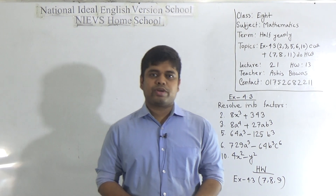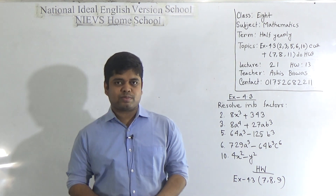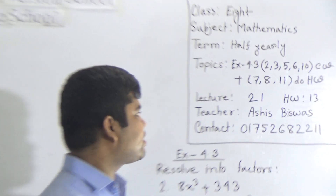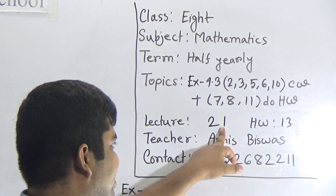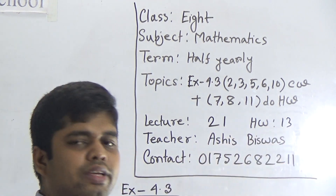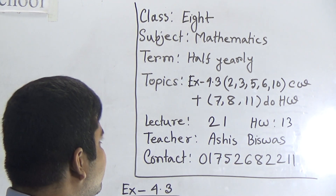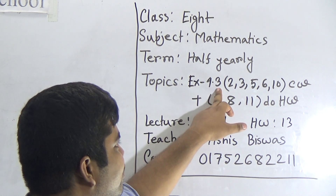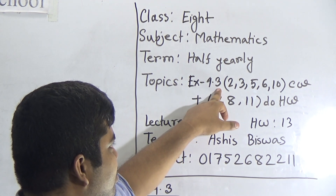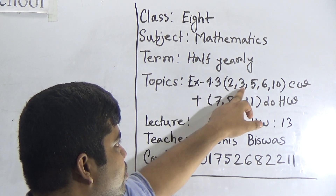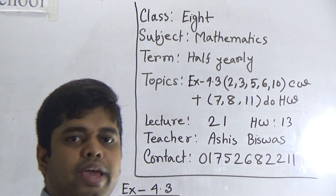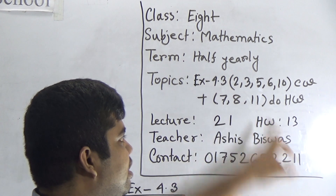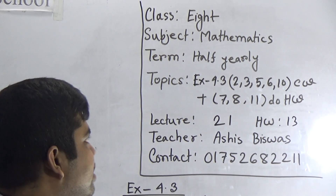Today I am going to take a math class for students of class 8. Today is our lecture number 20, and today's HW number will be 13. Our today's topic is exercise 4.3. From 4.3, we shall solve question numbers 2, 3, 5, 6, and 10 as your CWO, and question numbers 7, 8, and 11 will be your HWO.